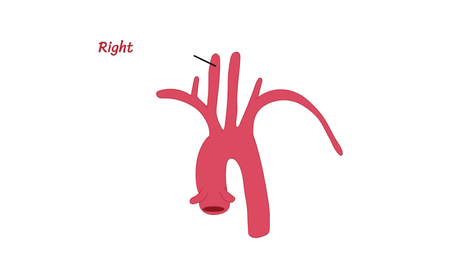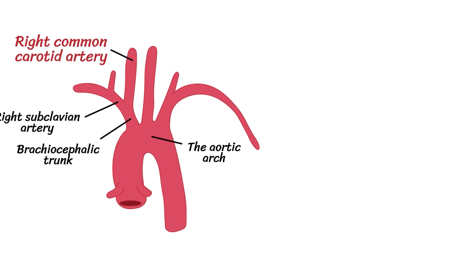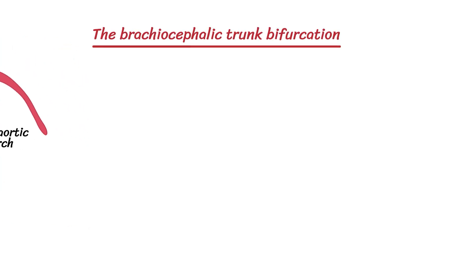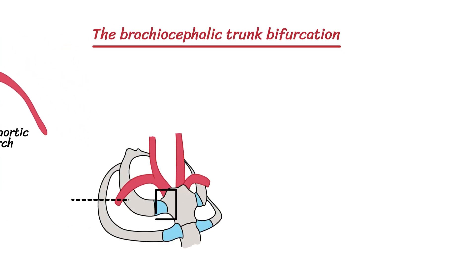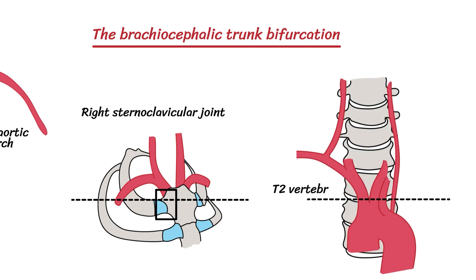The right common carotid artery arises from a split or bifurcation of the brachiocephalic trunk, the other branch being the right subclavian, which is a branch of the aortic arch. This bifurcation occurs roughly at the level of the right sternoclavicular joint, at the level of the T2 vertebrae.